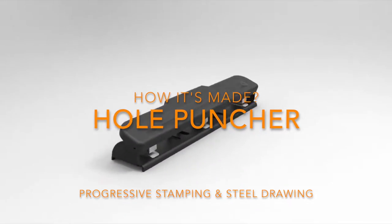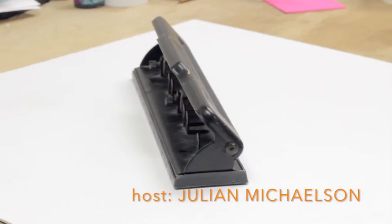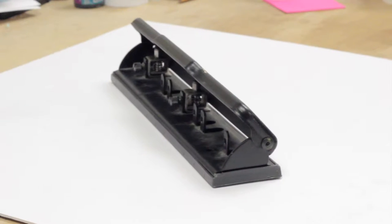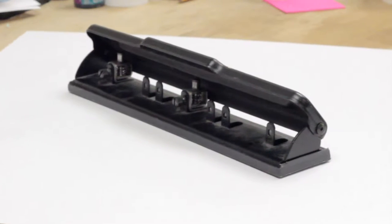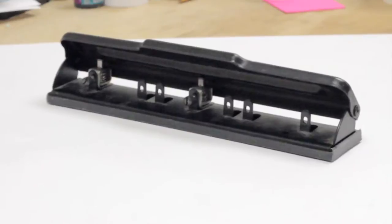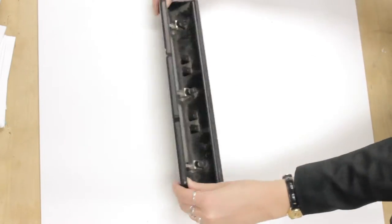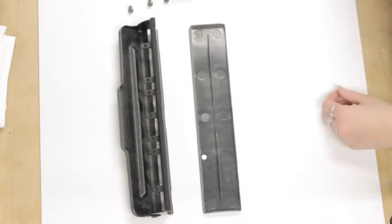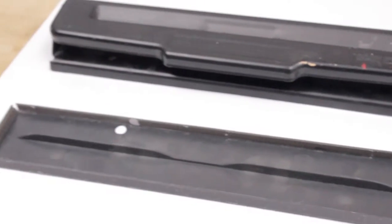Welcome to another episode of How It's Made, with your host, Julianne Michelson. Get excited, because today we are discussing something you may be familiar with, the paper hole puncher. We'll dive into two manufacturing processes used to make this wonderful tool, progressive stamping and steel drawing. Let's get started.